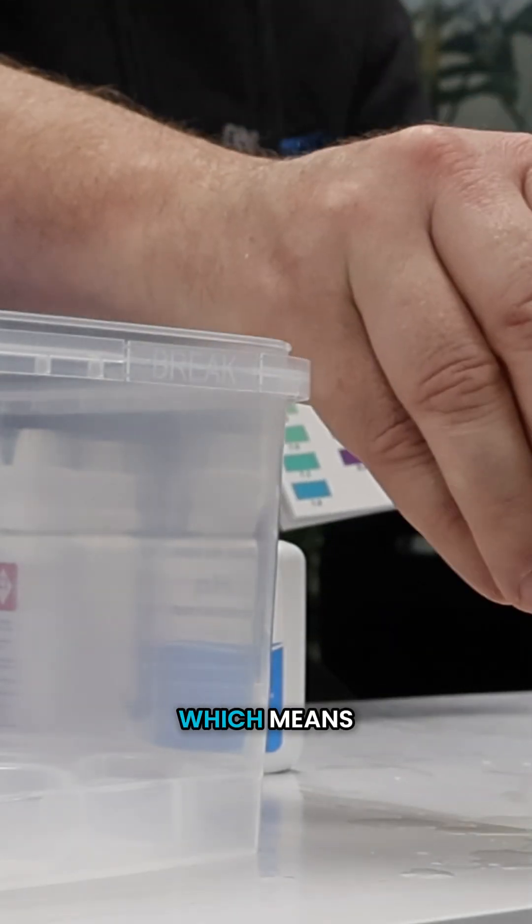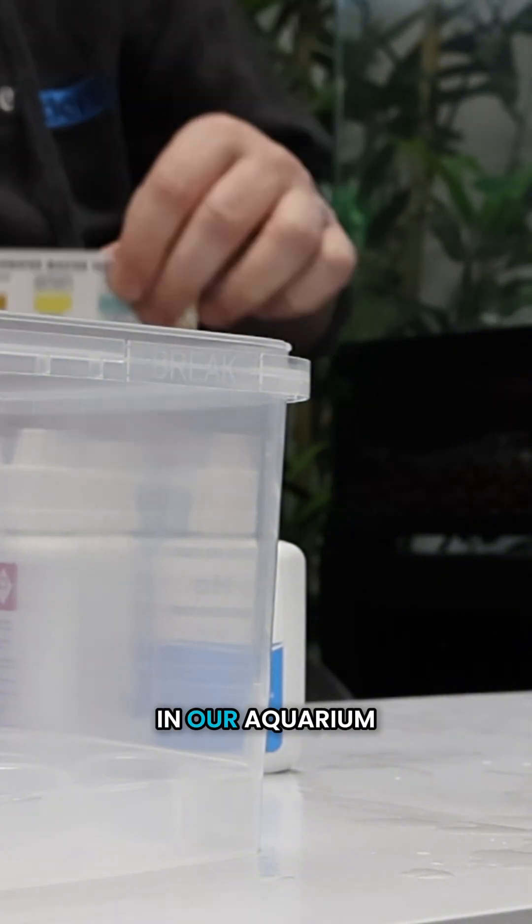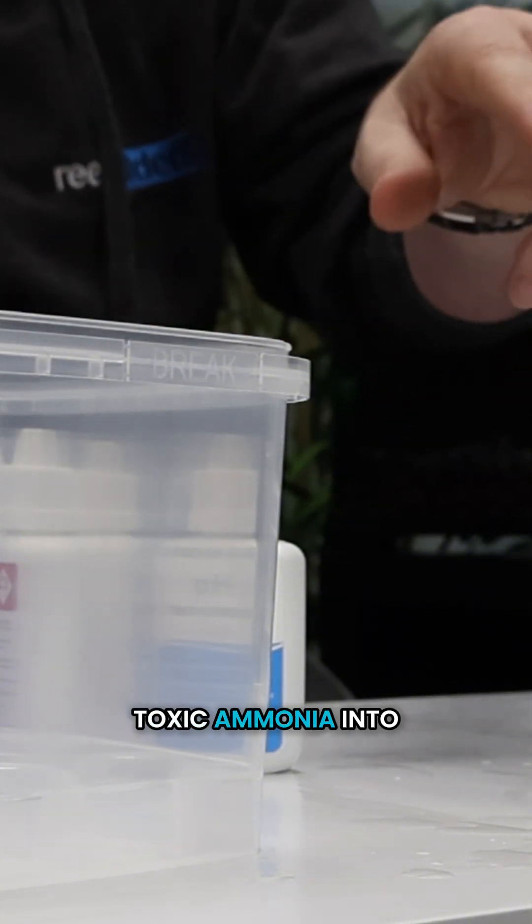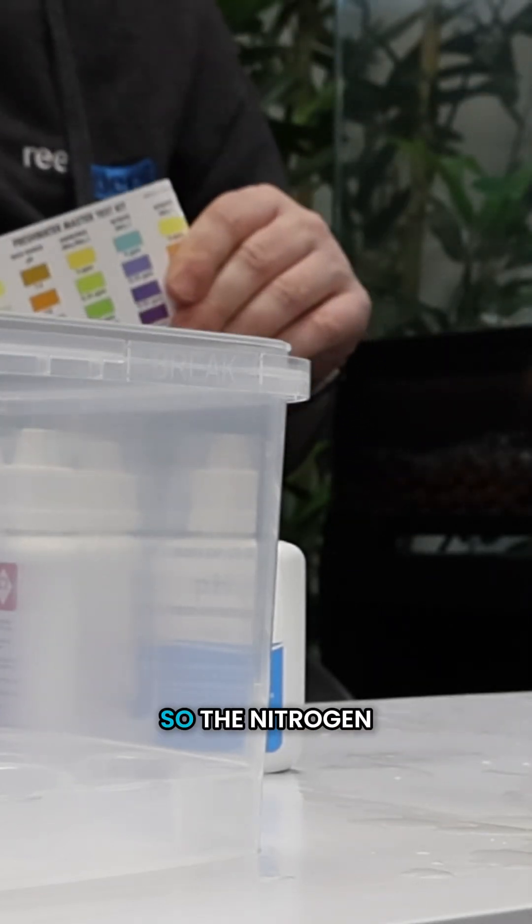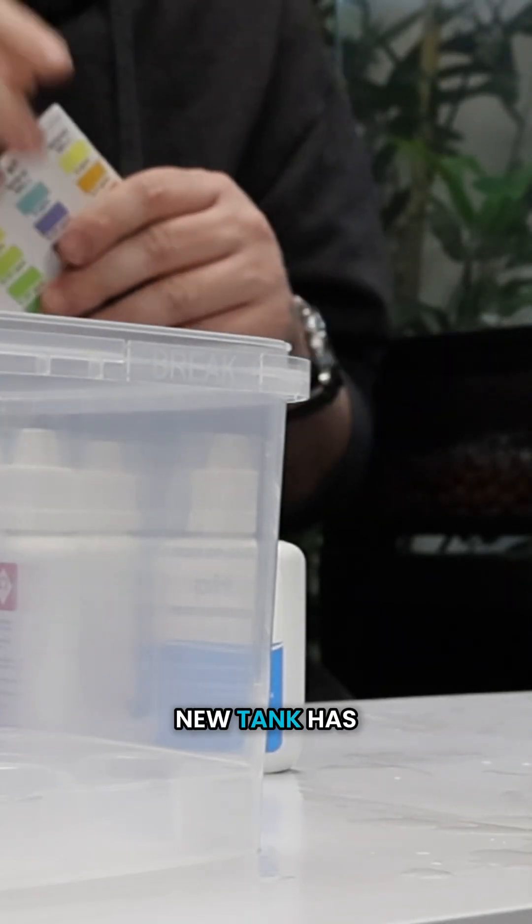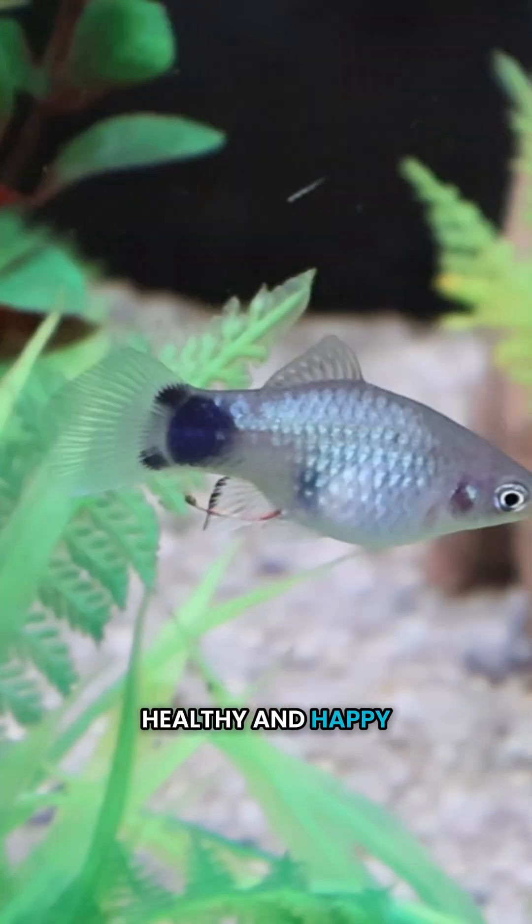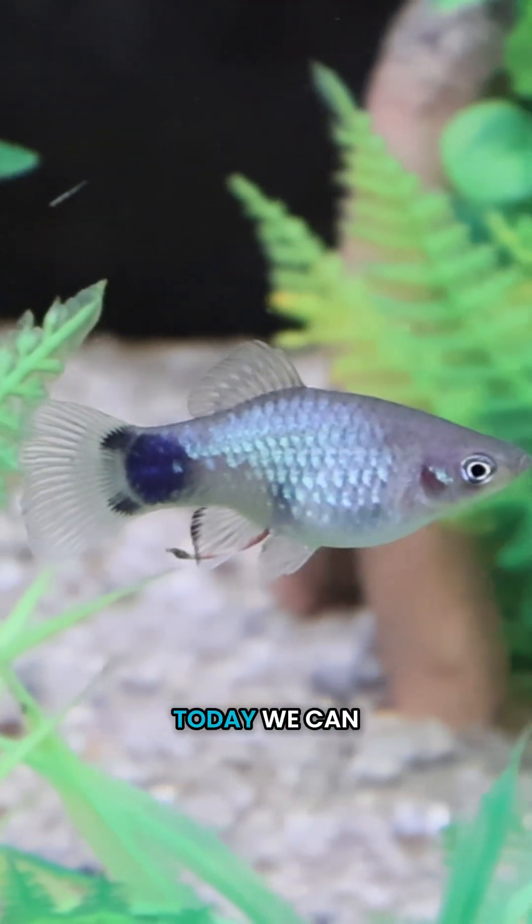Which means there's sufficient bacteria in our aquarium to convert toxic ammonia into nitrite and then into less harmful nitrate. So the nitrogen cycle in our new tank has begun. Our fish are healthy and happy, and if you want to add six more fish today, we can do.